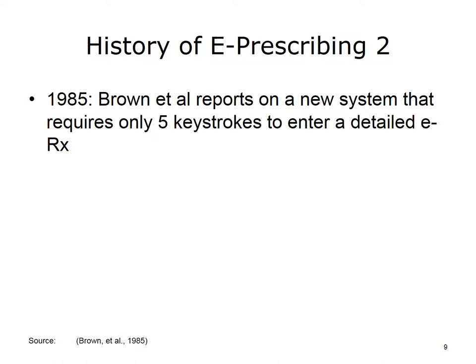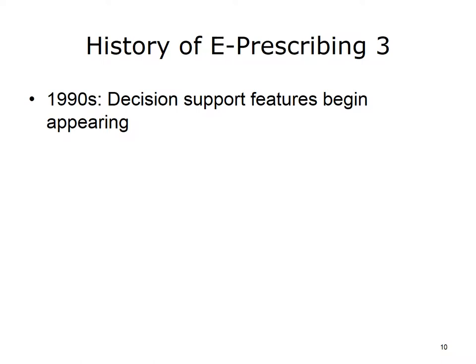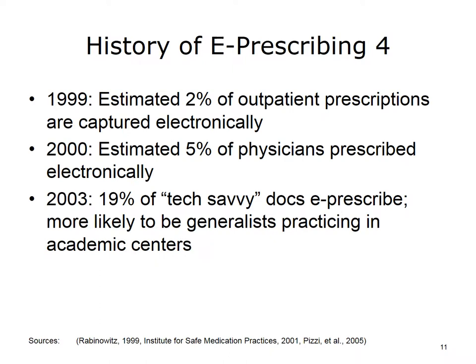By the late 1980s, a concern had developed among physicians that automation would result in so-called cookbook medicine. The term cookbook medicine was a negative term describing how doctors would follow computerized recipes of how to treat patients. This approach was viewed negatively as an erosion of the art and science of medicine. In the early 1990s, decision support features began appearing in CPOE and e-prescribing systems. Decision support systems were very basic at the time; for example, the computer may have reminded physicians to check for pregnancy if the patient was female and of reproductive age.